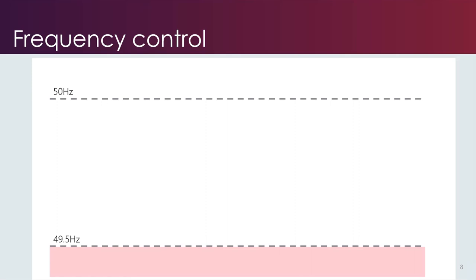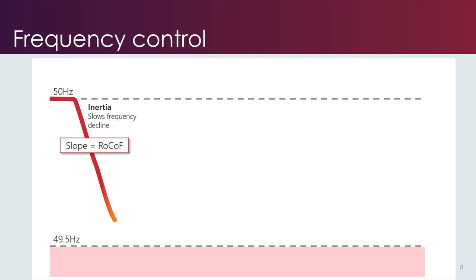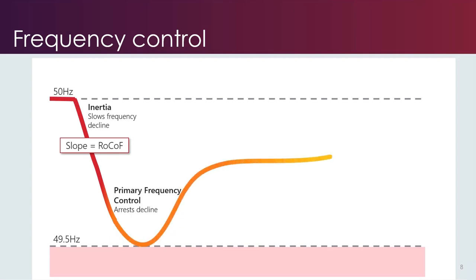To explain frequency control, we'll do a quick walkthrough of what happens to frequency following a disturbance using the example of losing a coal unit. At the start, during normal operation where everything is in balance, frequency will sit at or very close to 50 hertz. When the generator is lost, frequency will begin to drop. During these initial stages, the online inertia from large spinning machines connected to the network determines the rate of change of frequency — the RoCoF. We then have primary frequency control enabled generation reserves, which act in response to locally detected frequency changes, with headroom or footroom available to act in response to large disturbance events.